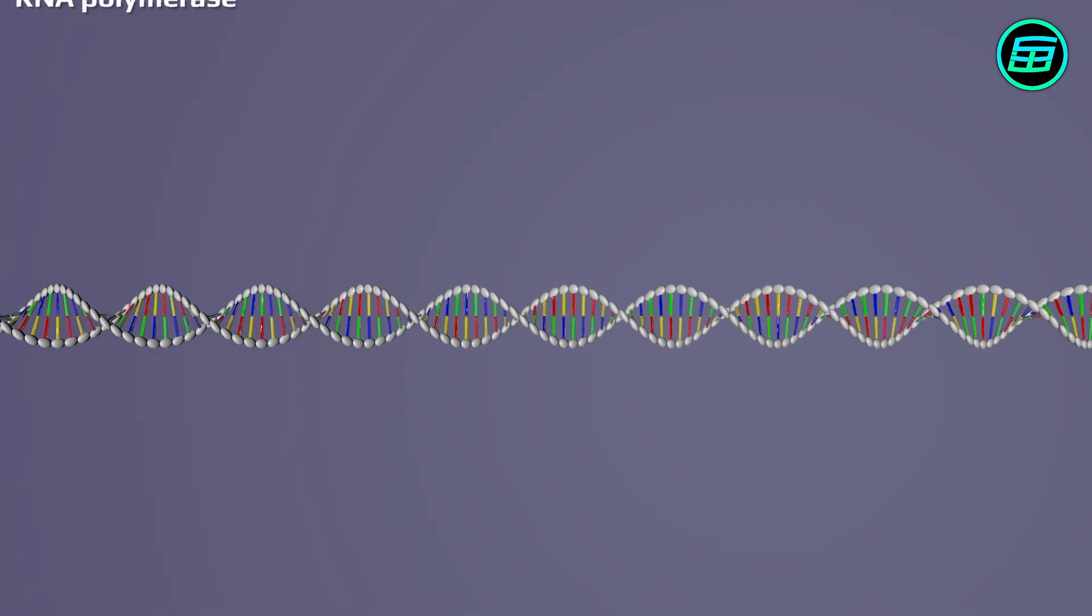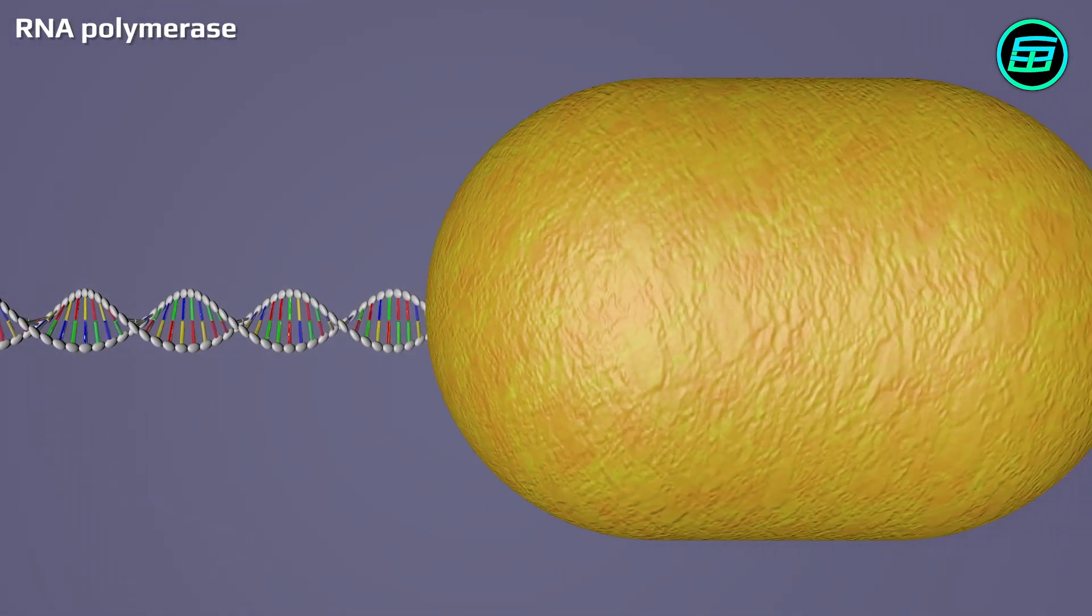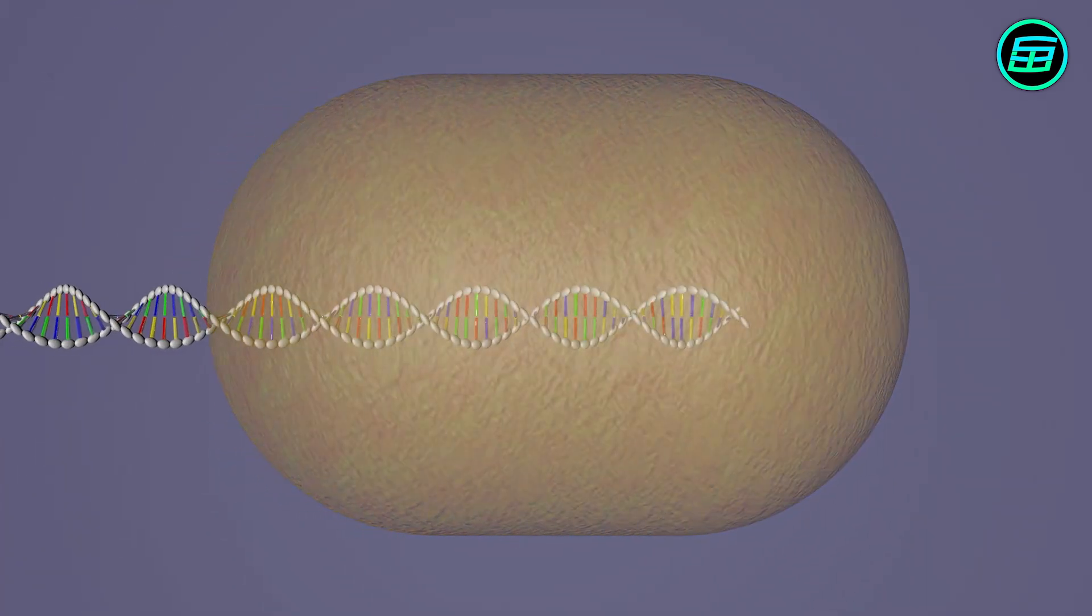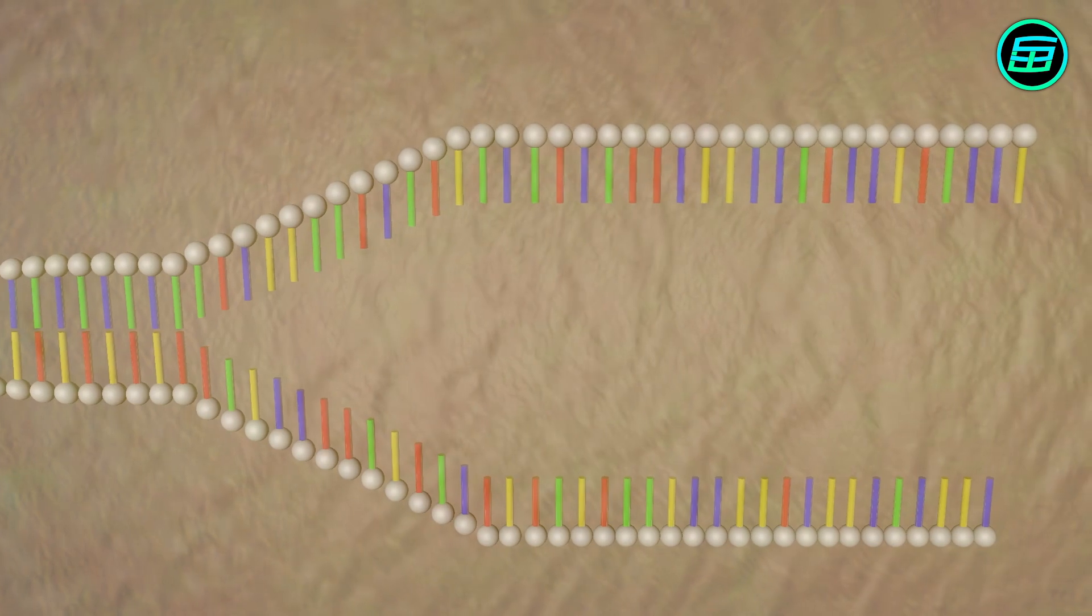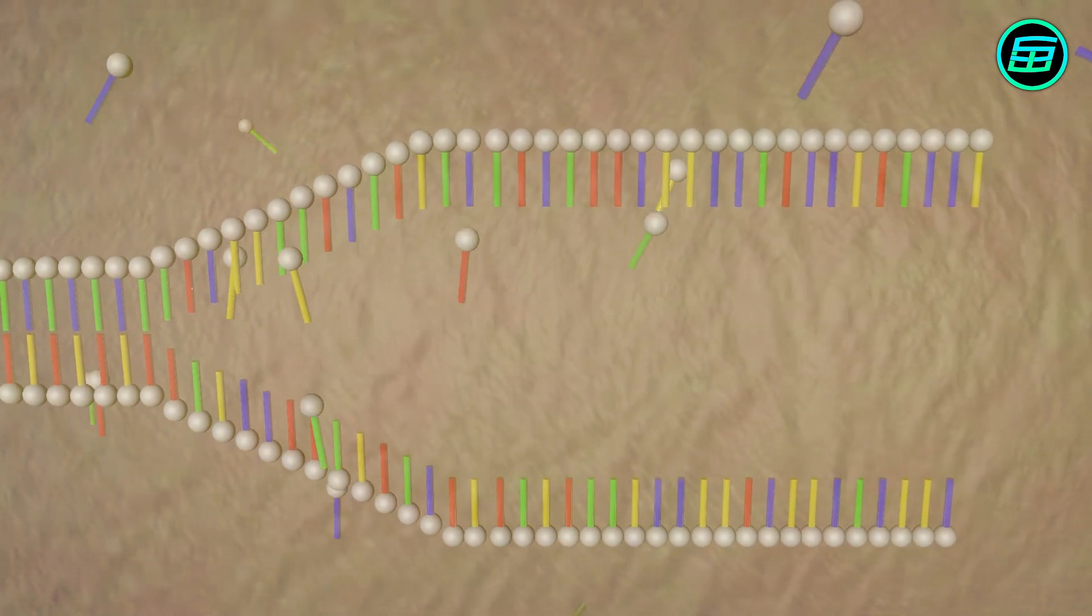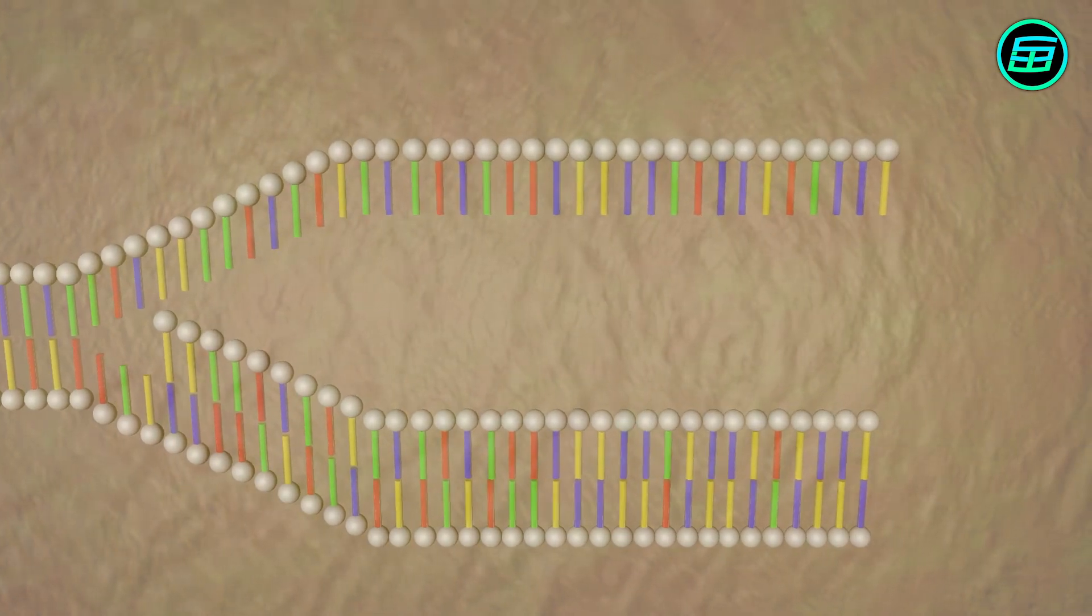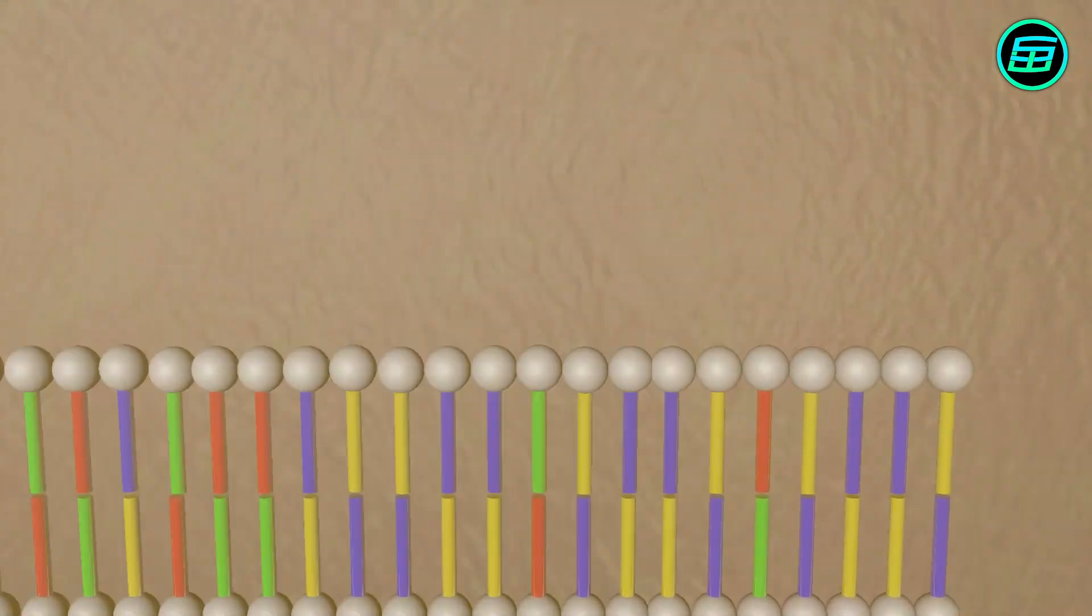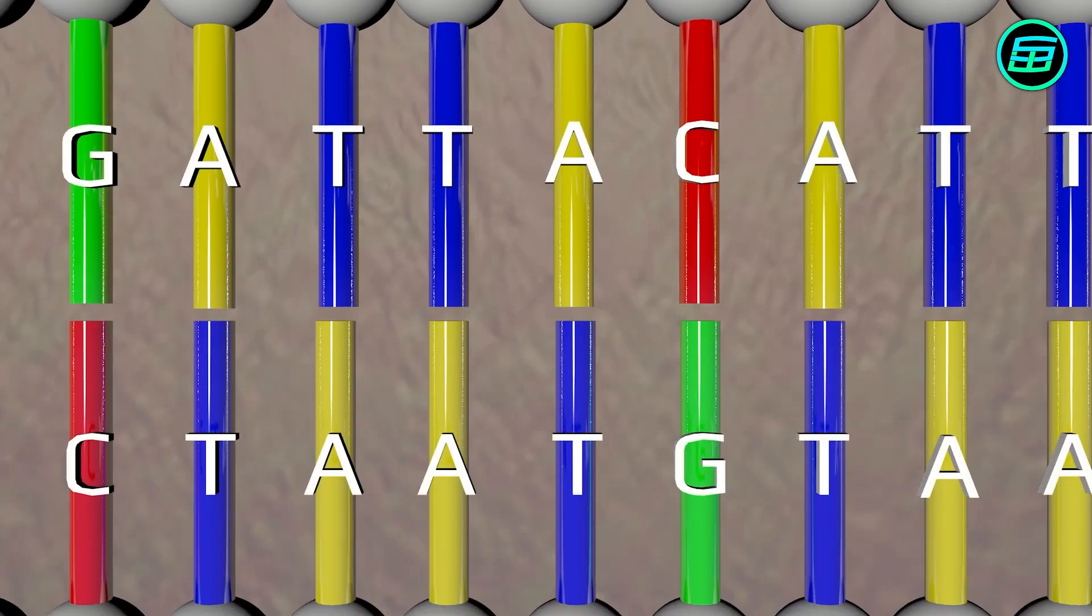The enzyme RNA polymerase binds to the DNA and starts to temporarily unzip it. Then free bases begin to attach to the DNA strand. It's not a haphazard process because the DNA bases adenine and thymine can attach only to each other, and likewise guanine and cytosine can attach only to each other.